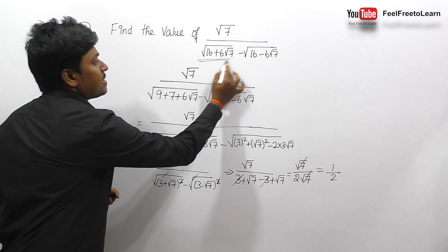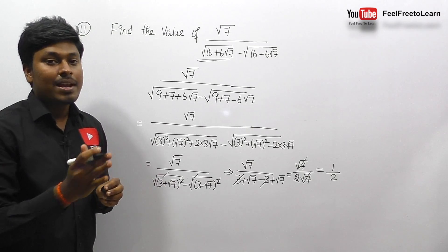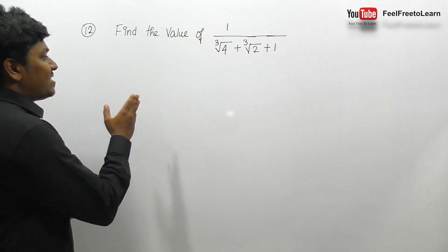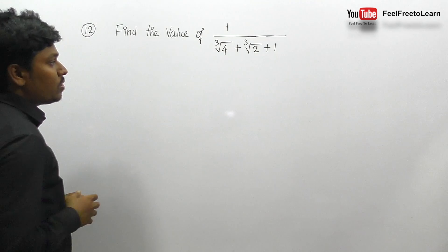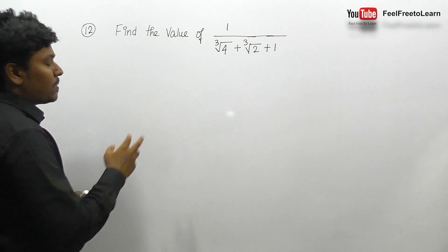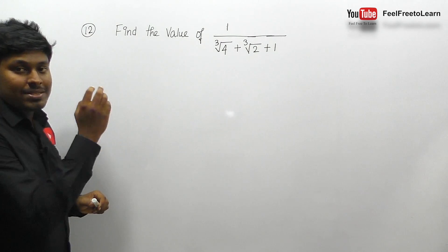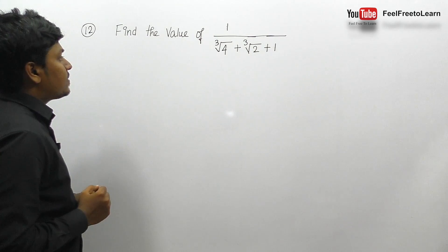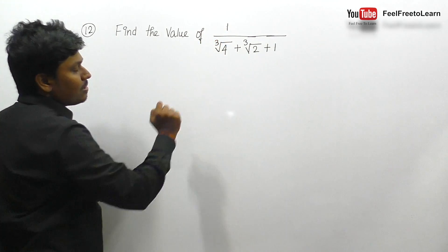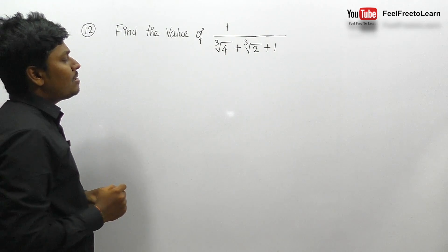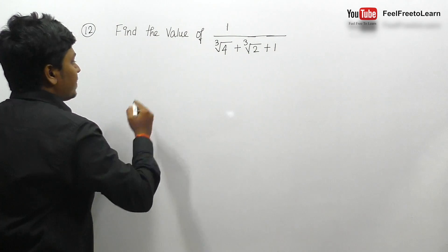Always remember: if you find an expression like this, try to convert it in terms of (a+b)² or (a-b)². Question number 12: find the value of 1 divided by (∛4 + ∛2 + 1). Our target is to find the value of that expression. We don't need to concentrate on the numerator because it is 1, but the denominator has ∛4 and ∛2.